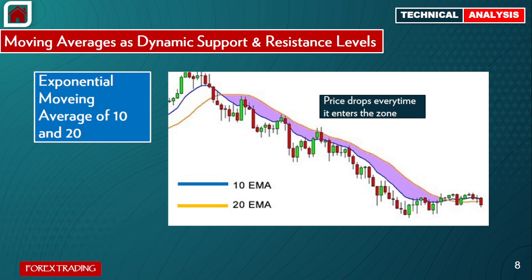Let's look at another example using EMA 10 and EMA 20. The blue line is the 10 EMA and the yellow line is the 20 EMA. Where both lines intersect and then move parallel downward, they create a zone — a mutual or common zone between the two moving averages. This zone also serves as a dynamic resistance level. Each time the price enters this zone, it drops back down, showing a consistent downward movement. Traders can use this zone to confirm their trades.